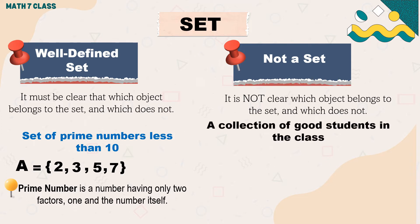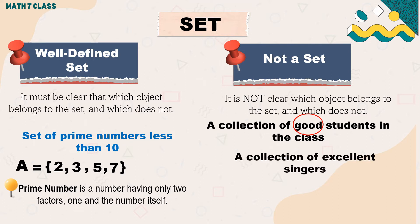Here it is very clear which object belongs to the set. Now consider this example: a collection of good students in the class. Is this a well-defined set? No — this is not a set because there is no definite rule to determine whether a particular student is good or not. Another example of not a set: a collection of excellent singers.